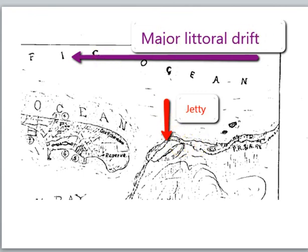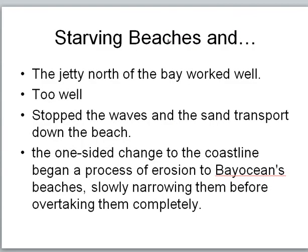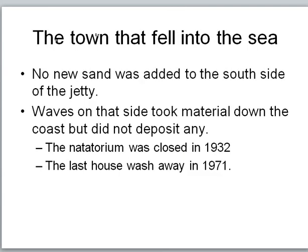What they found not too many years after the jetty was completed was that it worked really well — but too well. What it did was stop the sand transport down the beach. One side of the jetty filled with sand, and the other side — which was the actual town of Bay Ocean — was starved of sand. No new sand was contributed to the beach there. By the time the schoolhouse was opened, the natatorium had to be closed because the sand underneath it had become unstable. There was a breakthrough of ocean water into the bay, and basically the town just eventually washed away.